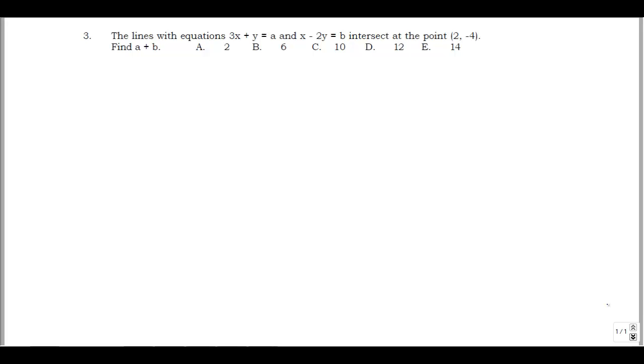So this is question 3 from the spring 2015 AMATIC student math league contest. The question says the lines with equations 3x plus y equals a and x minus 2y equals b intersect at the point (2, -4). We want to find a plus b.